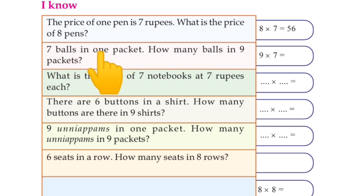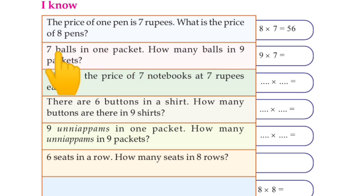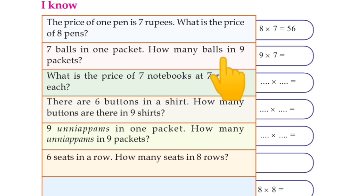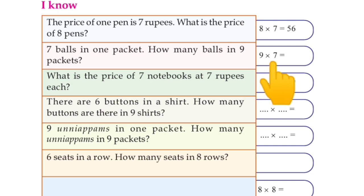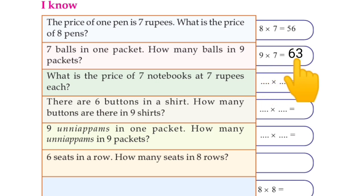There are seven bowls in one packet, and one packet costs seven rupees. How many bowls are in nine packets? Nine times seven is equal to 63.